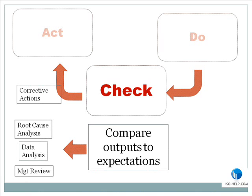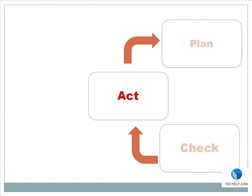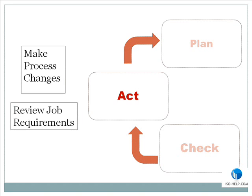Quite often, there are corrective actions that drive change in the system. Finally, the act phase. Sometimes this is the most difficult phase because it requires people to change what they are doing. The corrective actions, or other results of the check phase, point to process improvements to either eliminate defects or, preferably, lead to continual improvement. Sometimes this results in procedural or other changes, and sometimes this leads to rethinking the job specification.